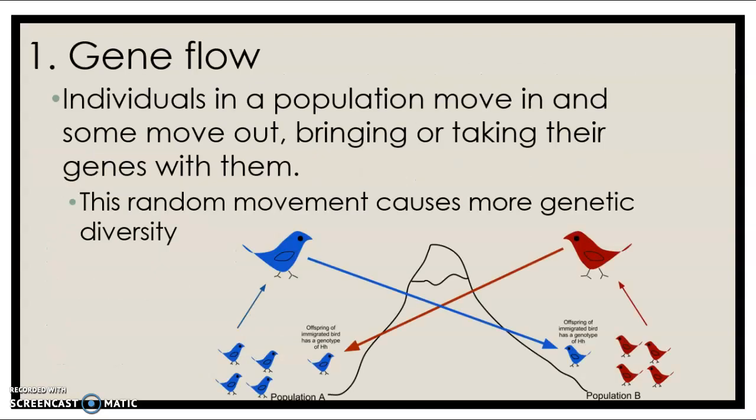Gene flow is when individuals move into a population — that's called immigration — or exit the population, which is called emigration. When an organism does that, they bring with them their genetics. For example, if somebody came into a population with traits nobody else had, that trait is now in the gene pool, just as effective as a mutation occurring there. That trait could be passed down to the next generation, and this random movement causes more genetic diversity, which gives organisms the best chance to survive.